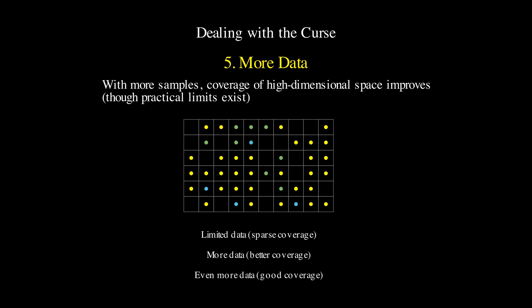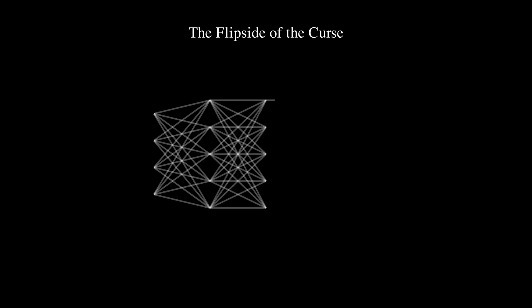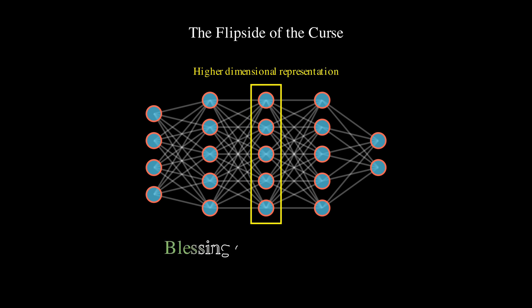Finally, it's worth noting that the curse of dimensionality isn't always a problem. In some cases, like in deep learning, high-dimensionality can actually be beneficial. This is sometimes called the blessing of dimensionality. The idea is that in lower dimensions, data that isn't linearly separable, in higher dimensions, it might become separable. This is one reason why some neural networks map inputs to very high-dimensional spaces before classification.